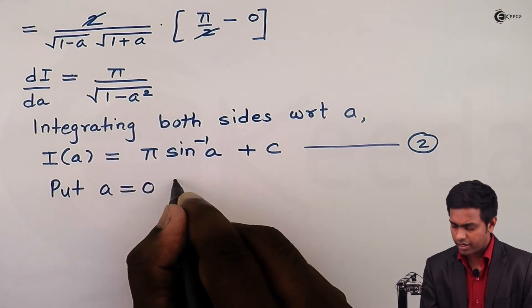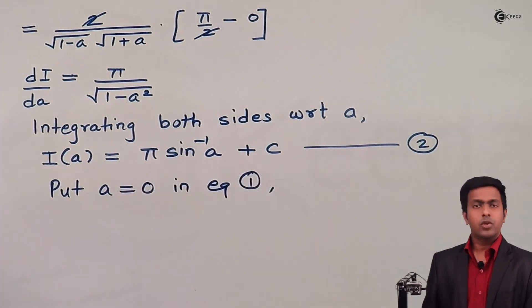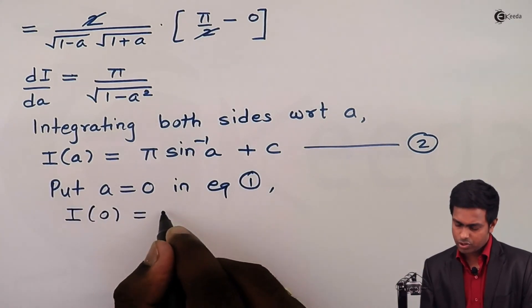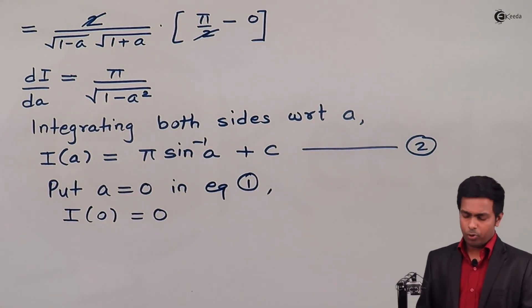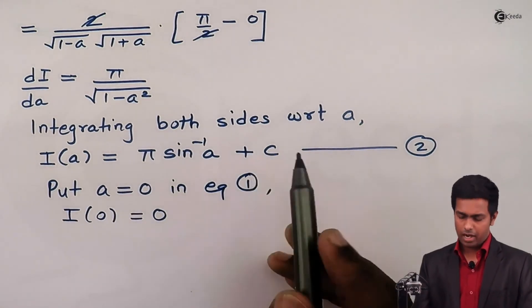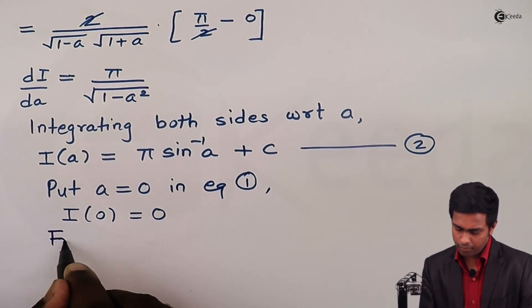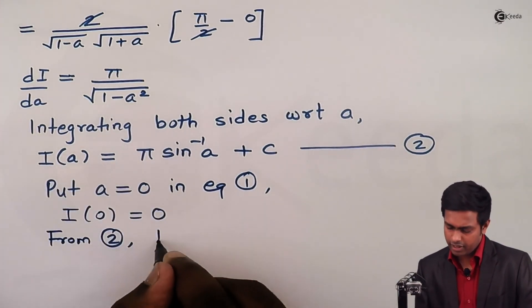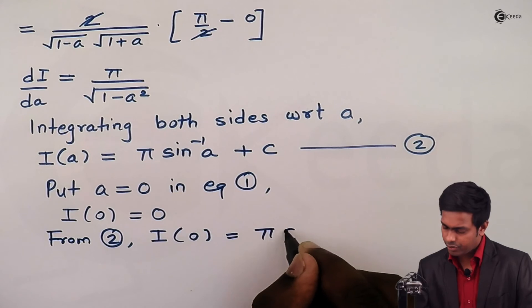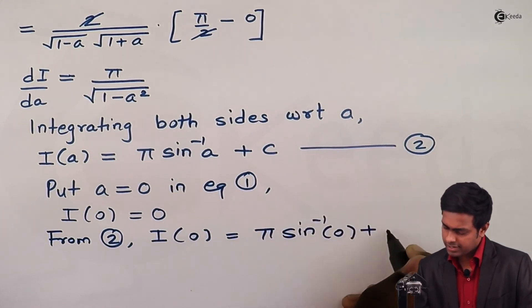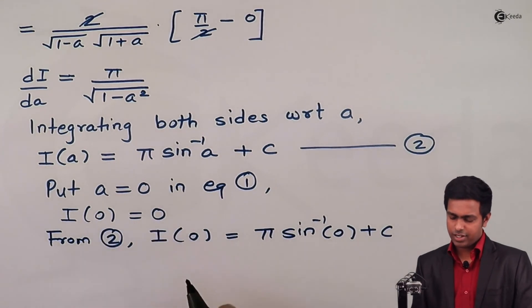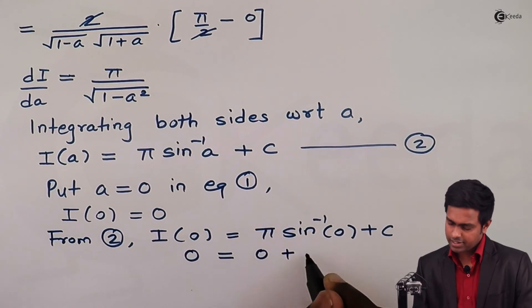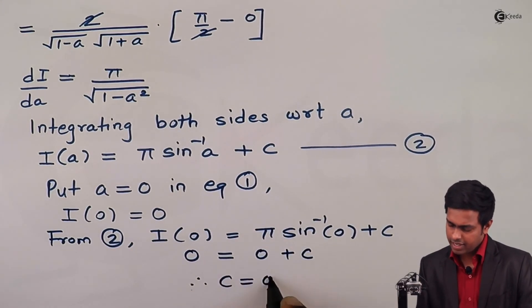Putting a = 0 in equation one: I(0) = 0. Now substituting a = 0 in equation two: I(0) = π·sin⁻¹(0) + c. Since I(0) = 0 and sin⁻¹(0) = 0, we get 0 = π·0 + c, which means c = 0.